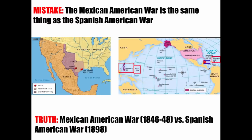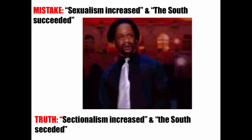Students often say the Mexican-American War is the same as the Spanish-American War. The Mexican-American War took place from 1846 to 1848; the Spanish-American War took place in 1898 — Spain and Mexico are different places. The Mexican-American War is where we took half of Mexico's territory and opened up questions about slavery in those territories. The Spanish-American War is when we took Spain's colonies and led to debates about America's role in the world. They're different.